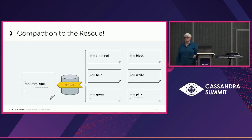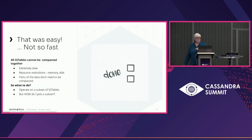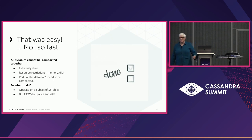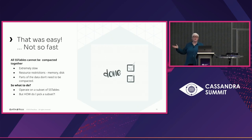You might think, let's just compact and everything's good — take all these values, compact them down to a single record with the most recent data. But it's not that easy. You can't really compact all the SSTables at once — it's extremely slow, resource-restrictive, uses up memory and disk, and parts of the data may not need to be compacted. So you need to operate on a subset of SSTables. The question becomes: how do I pick what subset to work on?